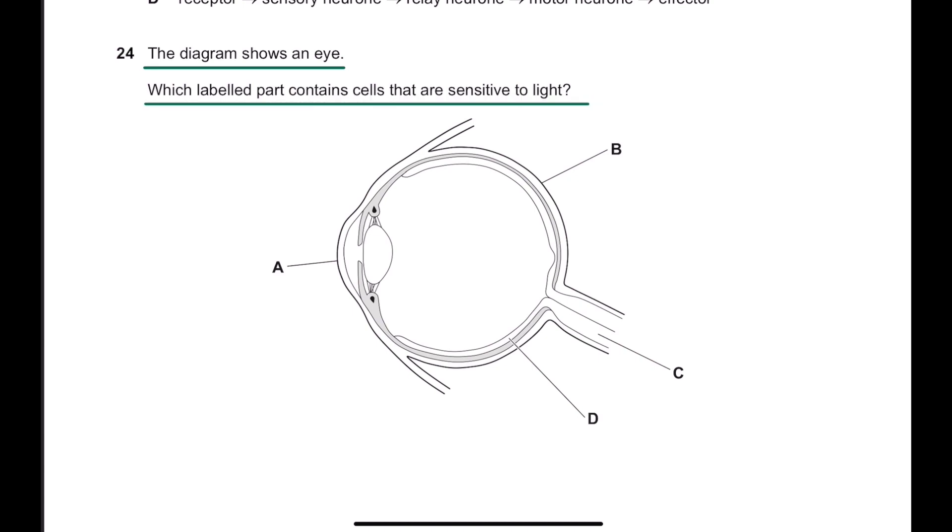The eye has two types of cells. Actually, there are many types of cells, but for IGCSE you guys only have to know two types of cells, which are rods. The other one is called cone cells.